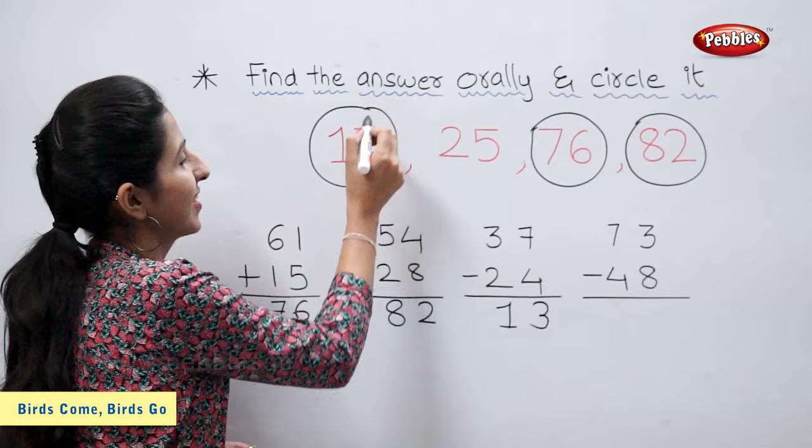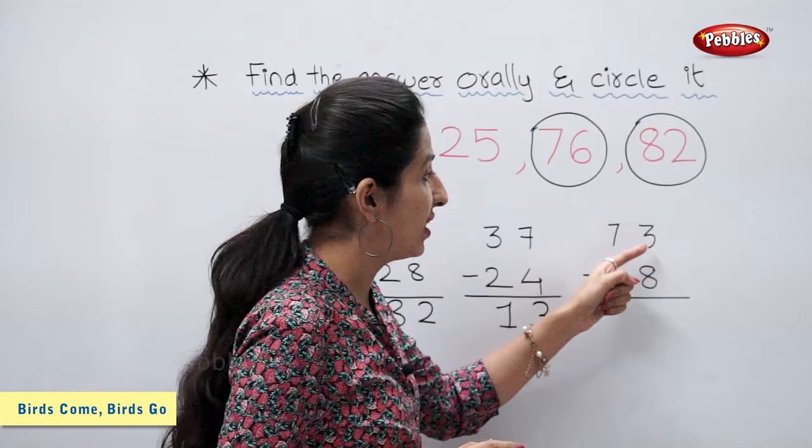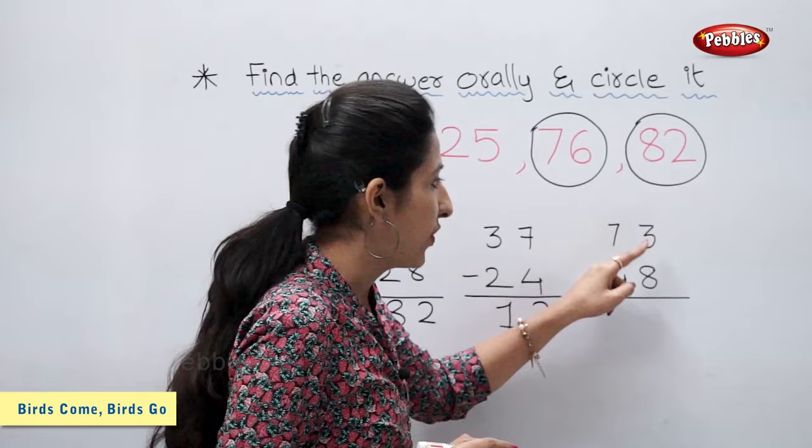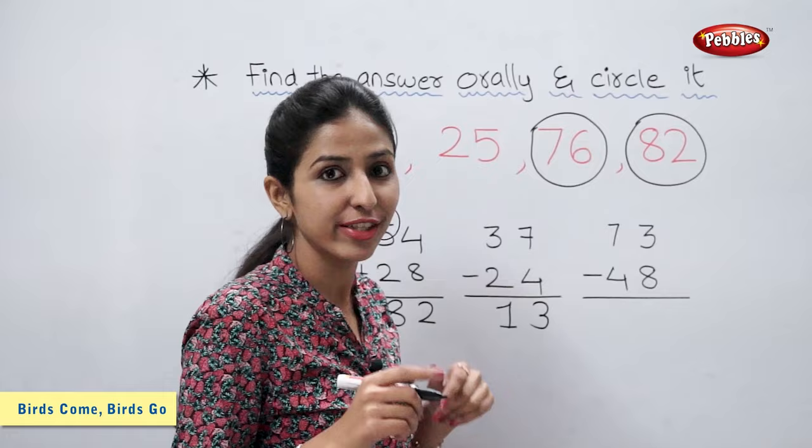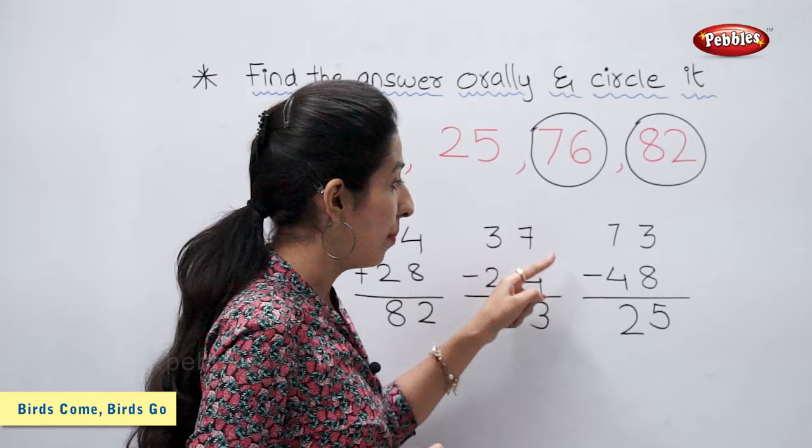73 minus 48. Students, we cannot subtract 8 from 3. So let's borrow. 7 becomes 6. 3 becomes 13. Now 13 minus 8 is 5. 6 minus 4 is 2. 73 minus 48 is equal to 25. Let's circle 25.